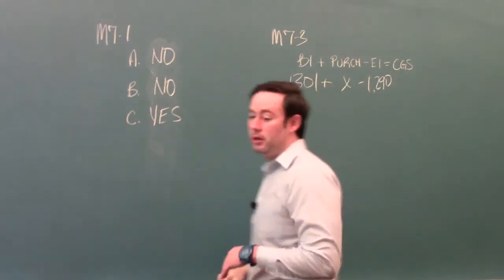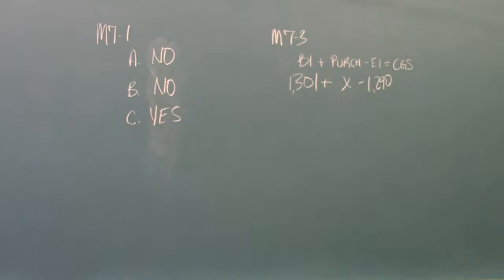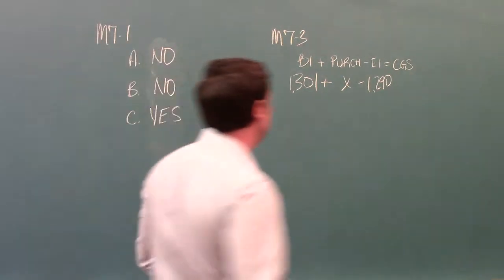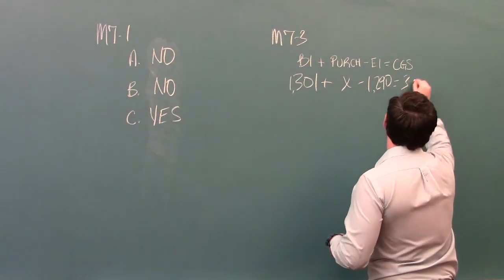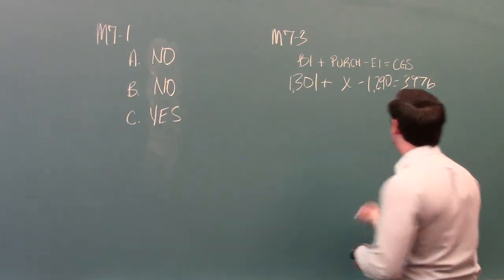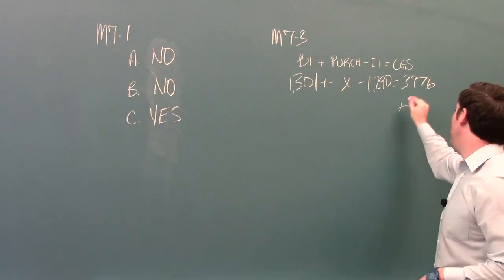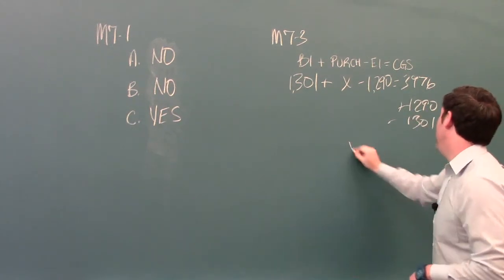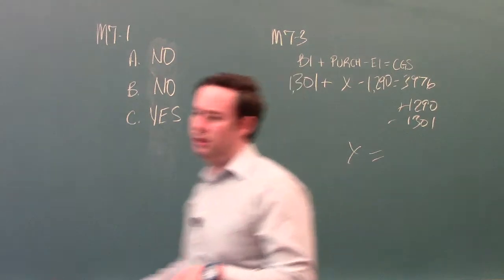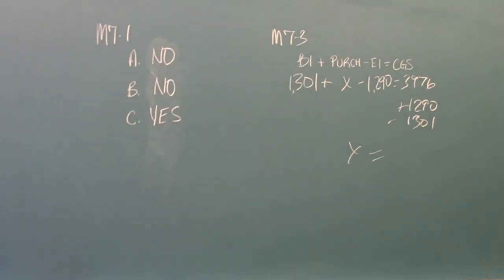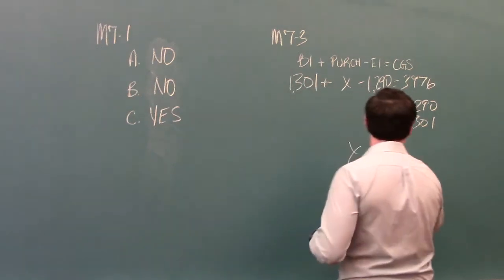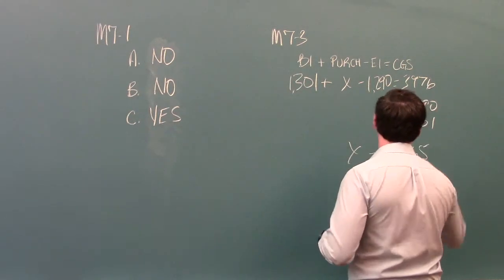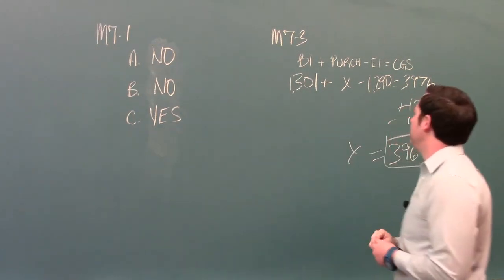I'm just going to comment that we make these terms like. And then cost of goods sold. Cost of goods sold tells us it's 3.976. Okay, then all we have to do is solve, add the 1.29.0 minus the 1.301. X should give us 3.965. And that's your amount of purchases.